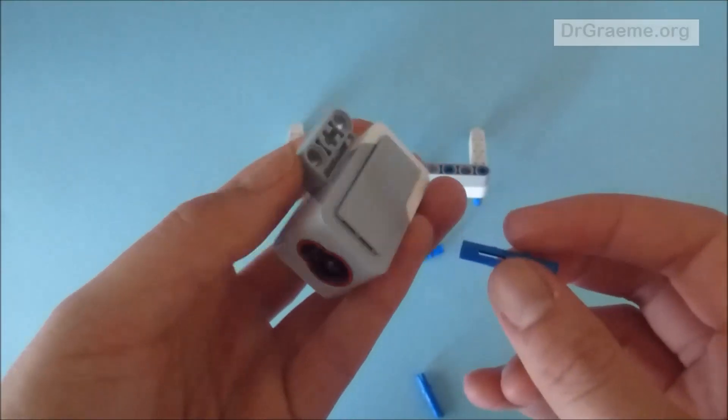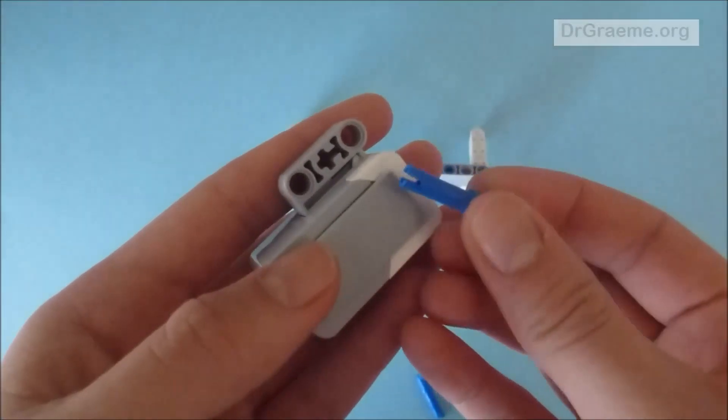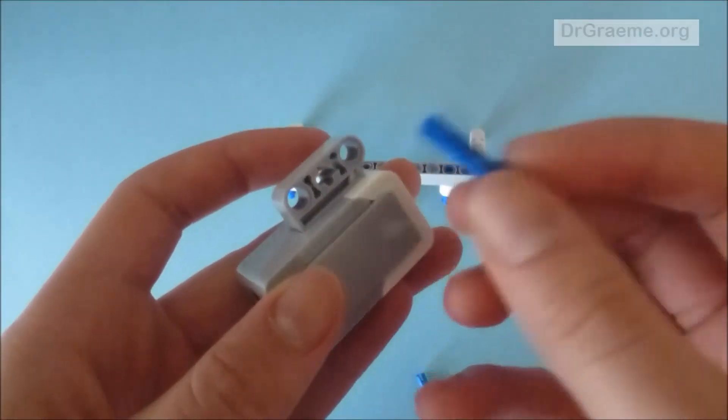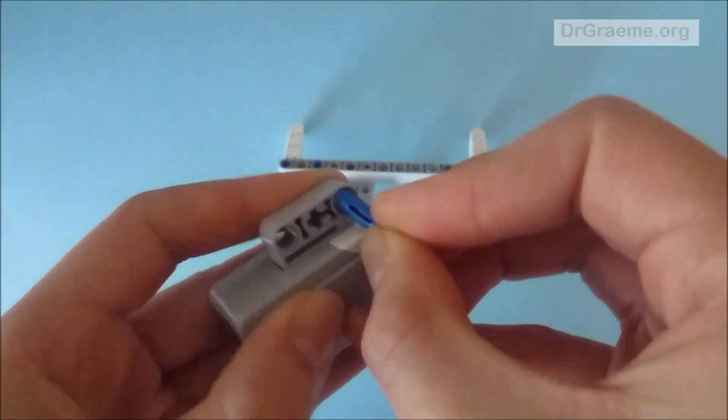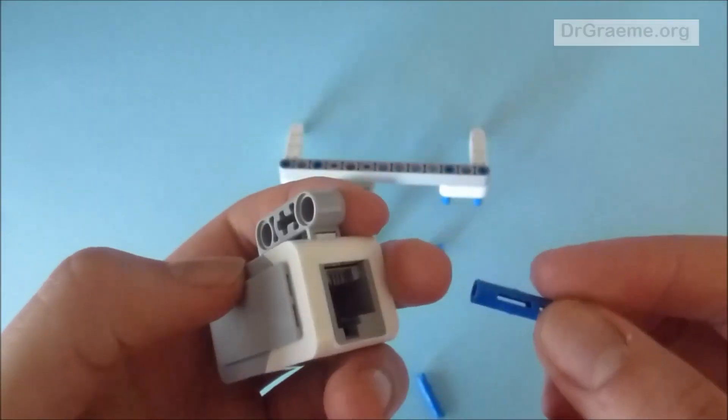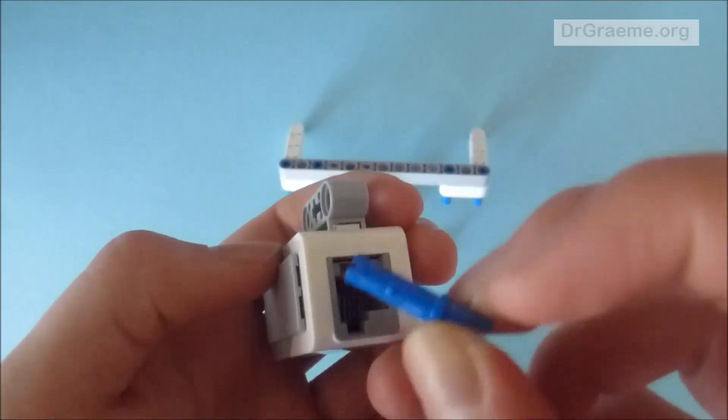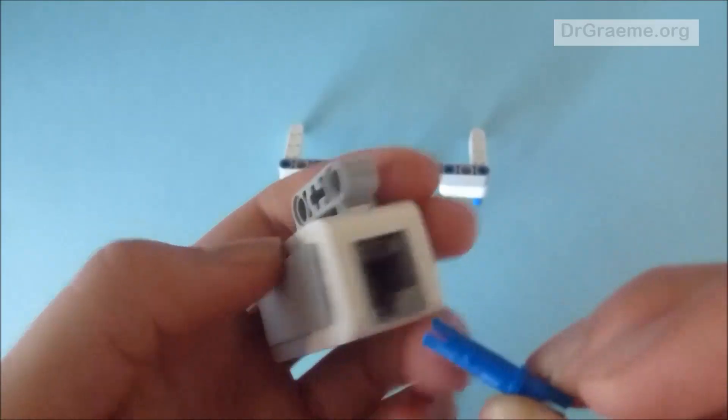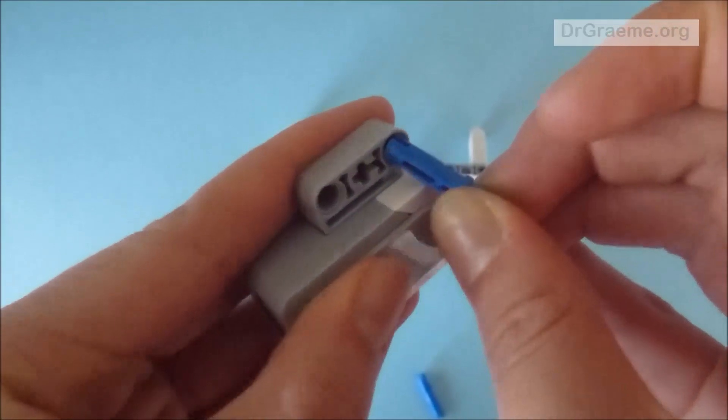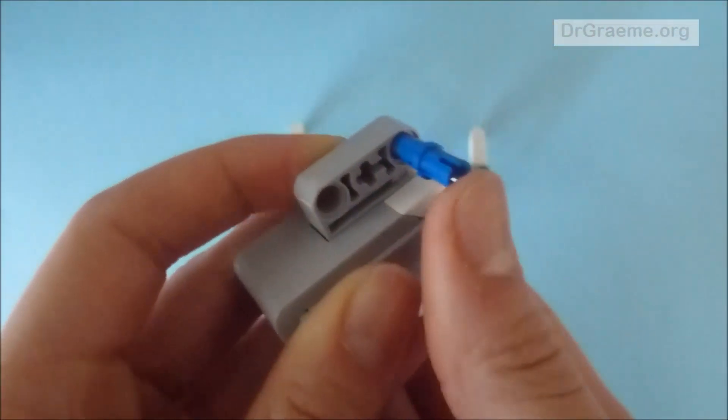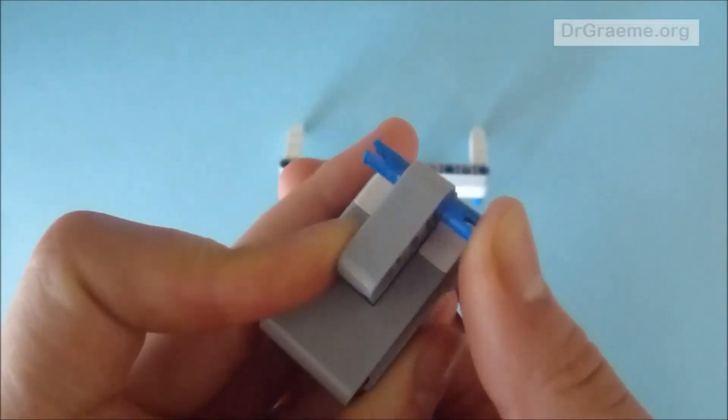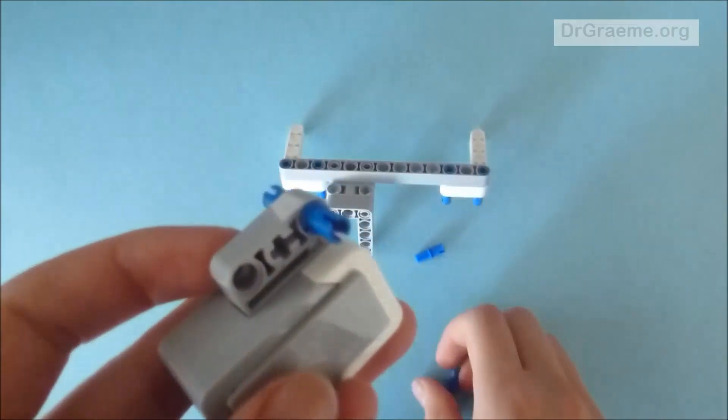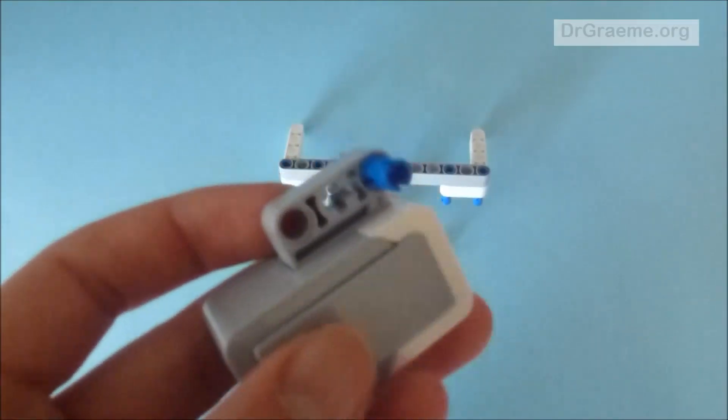Now we take the light sensor and place the long connector rod, the long end, into the top hole of the light sensor - and by top I mean the place where the cable would go. I place it into this hole and push it through until you can see the same amount of connection on the other side.